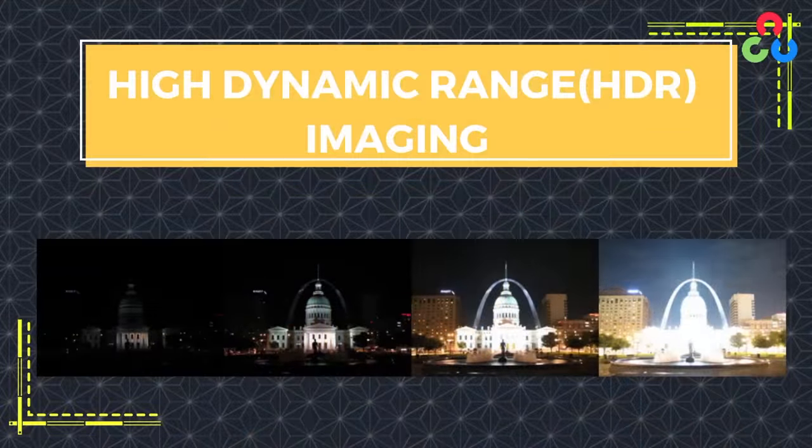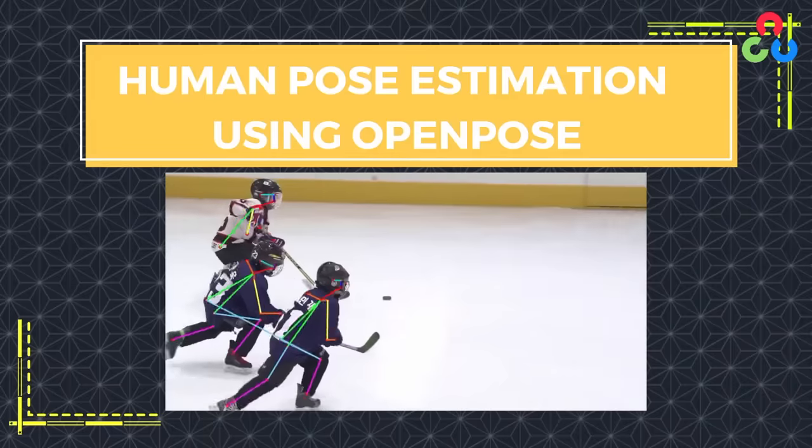Next, we will dip our toes into computational photography and create high dynamic range images by combining photos taken using different exposures into one single beautifully lit photo. OpenCV also implements many classical machine learning algorithms and has an entire module dedicated to deep learning inference. We will learn how to implement face detection and object tracking, and finally wrap up by learning how to use the deep learning module for object detection and pose estimation.